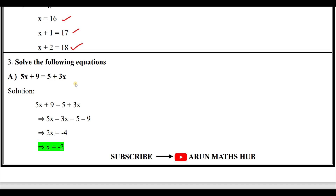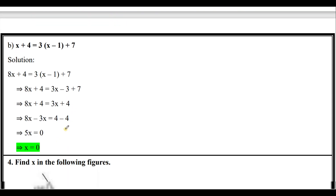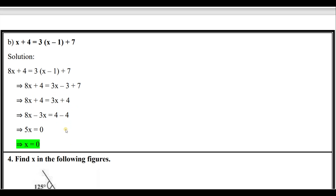Rearrange the terms — shift all variables to the LHS and numbers to the RHS. 5x stays; shift 3x to LHS, it becomes -3x. 5 stays on RHS; shift 9 to RHS, it becomes -9. So 5x - 3x = 5 - 9, giving 2x = -4, therefore x = -4/2 = -2. Next equation: 8x + 4 = 3(x - 1) + 7.